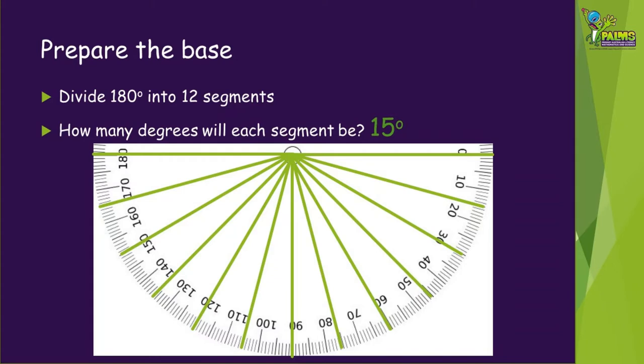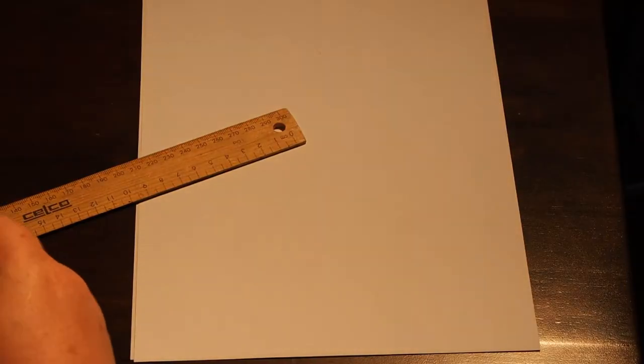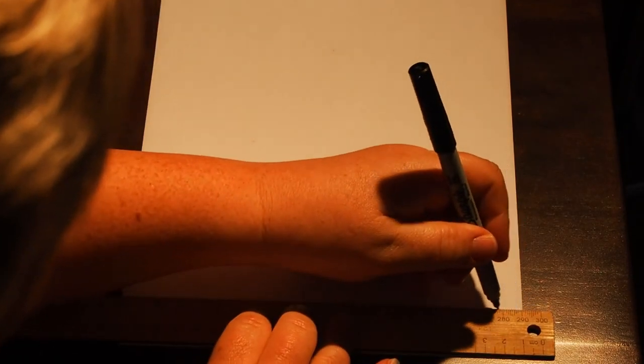It's best to use a pencil for the next part so you can erase any mistakes, but we'll show you using a pen as it shows up more clearly on video. Take a piece of paper and rule a straight line at the bottom of the page, just up from the bottom a little. This is the baseline.